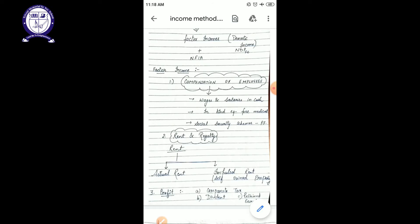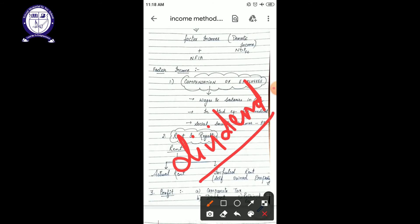Second one is dividend. I have written the spelling over here wrong. Dividend. Now dividend is the amount which you pay to the shareholders of the company.